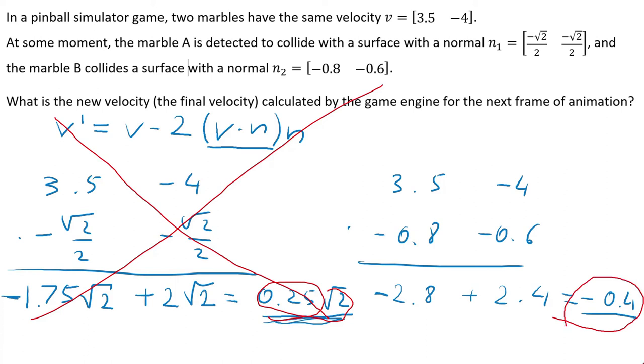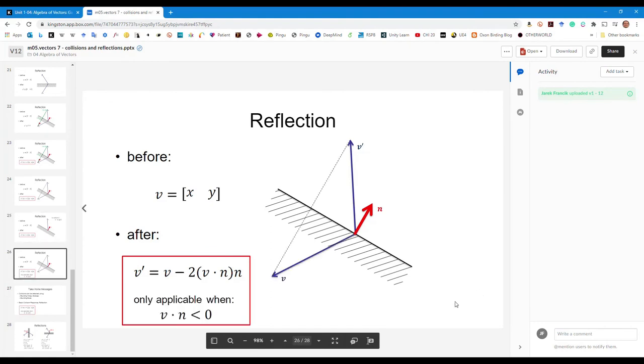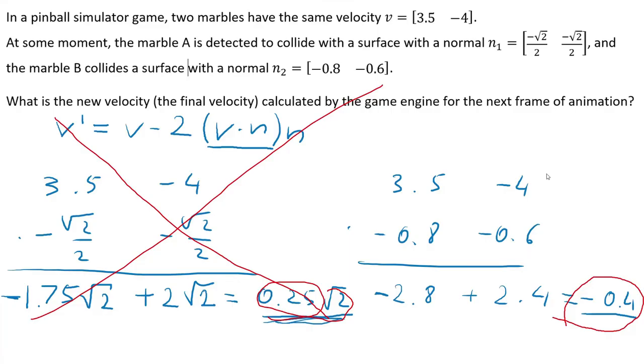So it is important to note this one point. Our reflection formula is only applicable if v dot n is less than 0, so only for the right hand side for the ball B.